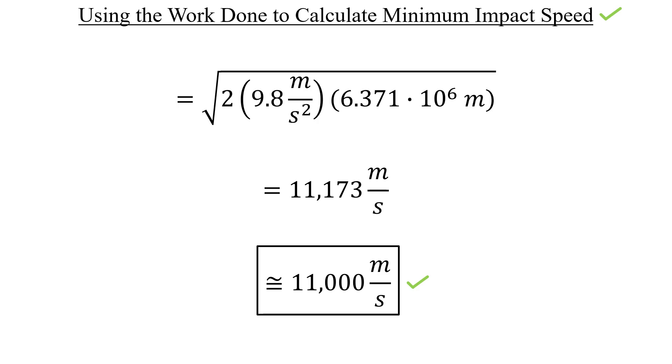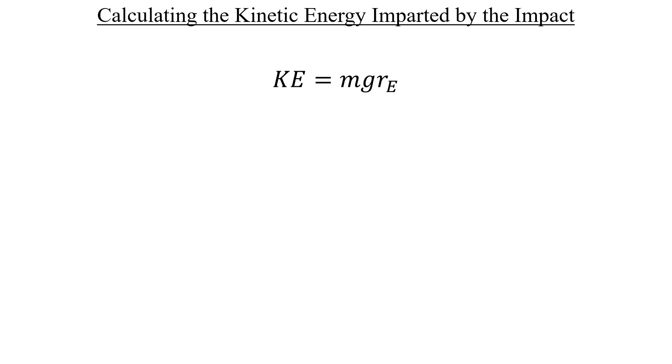Finally, onto the imparted energy to the Earth. We saw earlier that the kinetic energy, the ½ mv final squared, that was equal to this mg times the radius of the Earth quantity. So all we need to do here is just multiply these numbers together. And here's what I get out of my calculator.